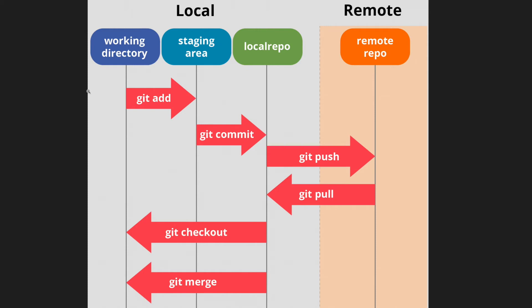Pay attention to the verbs that are used there: add, commit, and push. These are all Git commands and we'll use them quite a lot. The local repo is where we commit files we want to track, and the remote repo is where we push those committed files to back them up and optionally make them available to others.